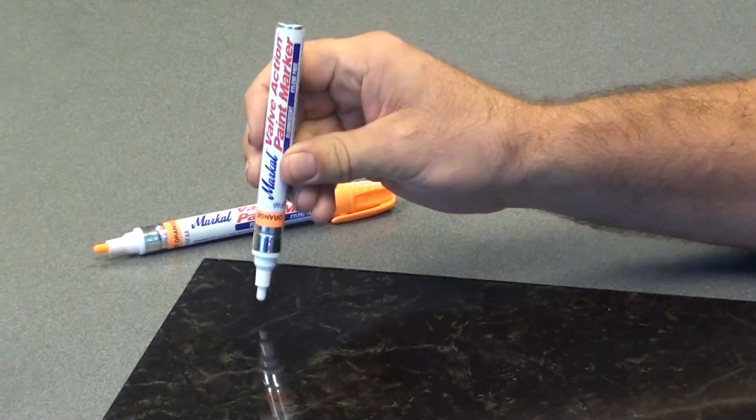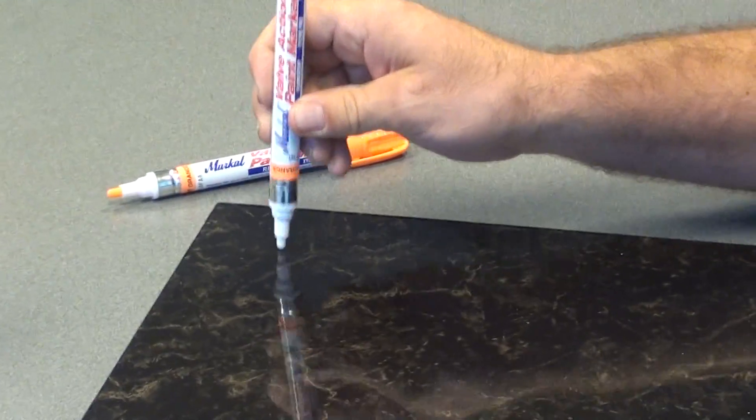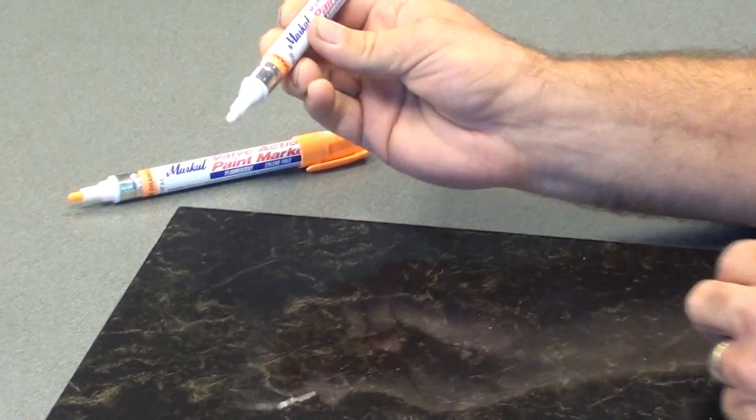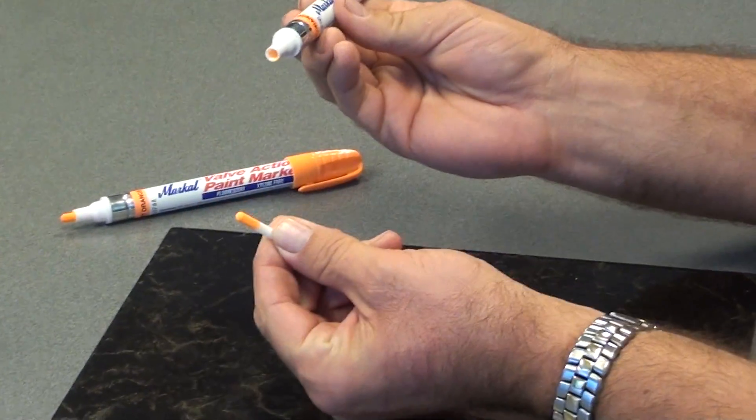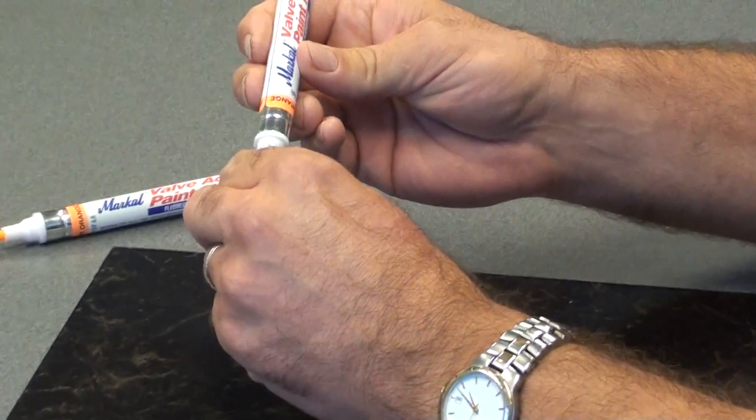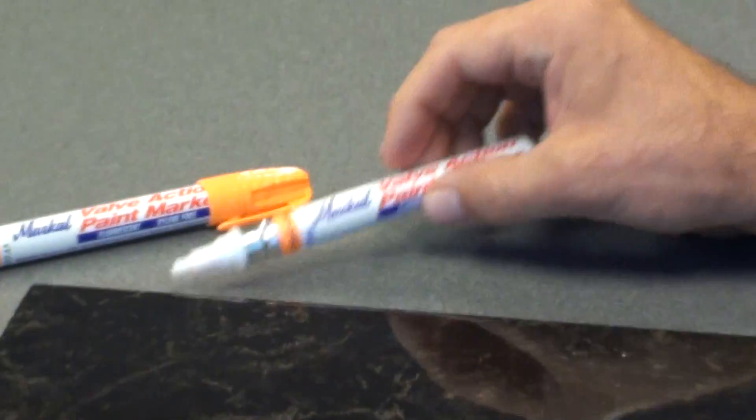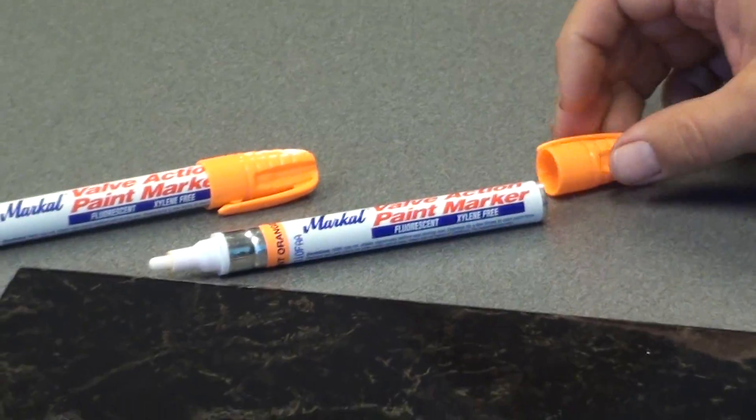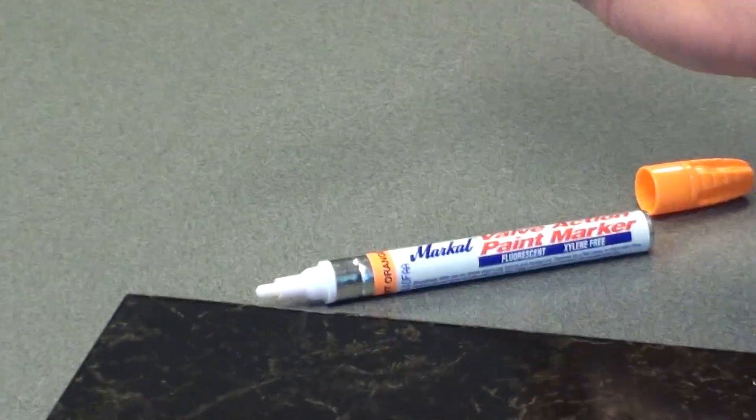To prime it simply press the tip on a hard surface and the paint will transfer from the barrel through the nib to the surface. Generally it takes 15 to 30 seconds to prime for the first time.